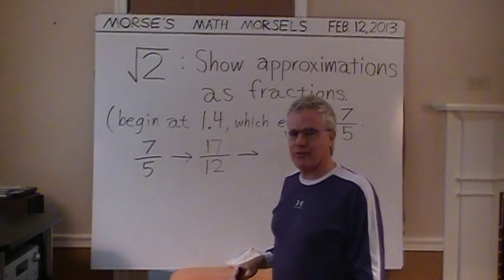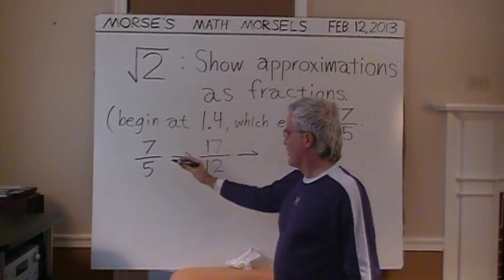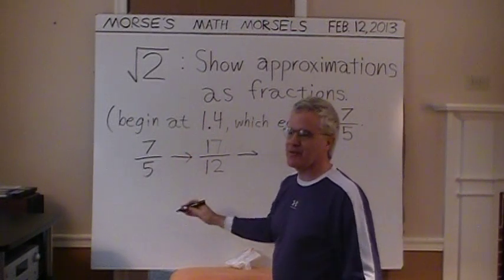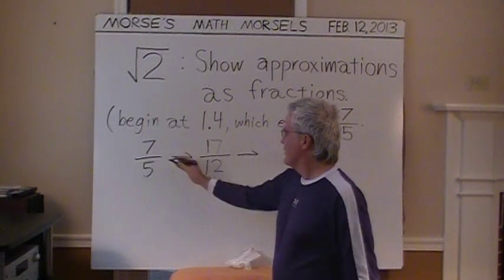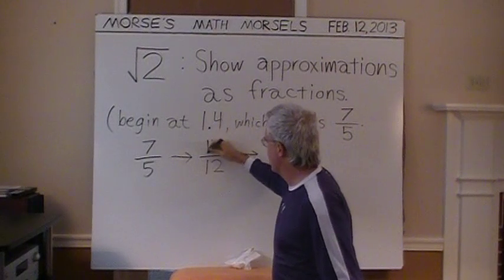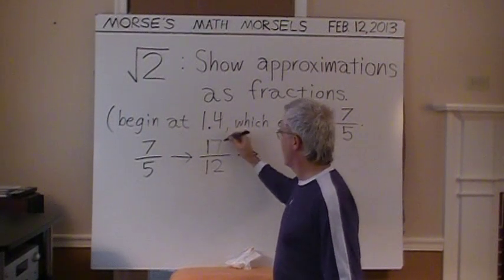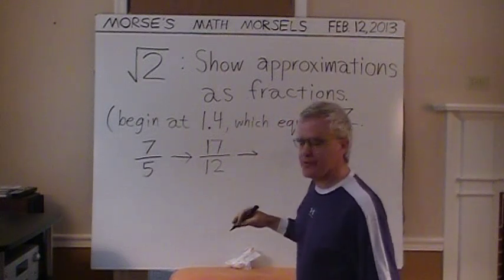This smaller fraction, 7 fifths, is kind of like starting out the snowball and then building onto it. The hard part is getting it started. So I used the 1.4 approximation, kind of like a jumping off point. And then you're kind of building on, much like adding layers of snow or layers of numbers. That's where 17 twelfths comes from.